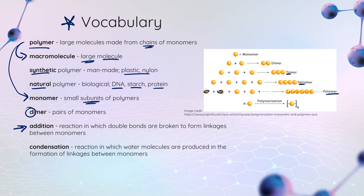Today we're building polymers via addition reactions: we take double bonds in our monomers, break those double bonds, and form linkages to build our polymers. At a higher level, you'll also learn about condensation reactions, where we pull water molecules out from between our monomers to build polymers. I included that here even though this is an SL lecture because I wanted my biology friends to be able to make the connection — we talk a lot about condensation reactions in bio.